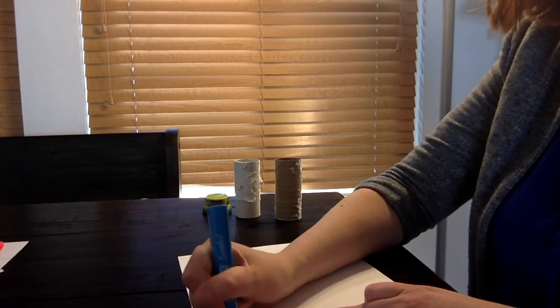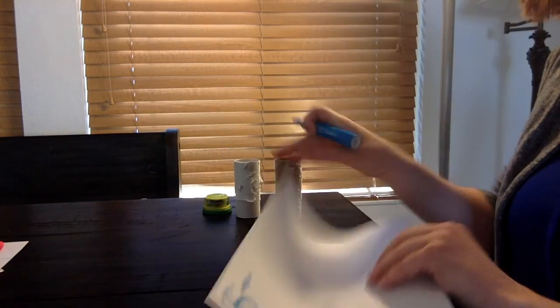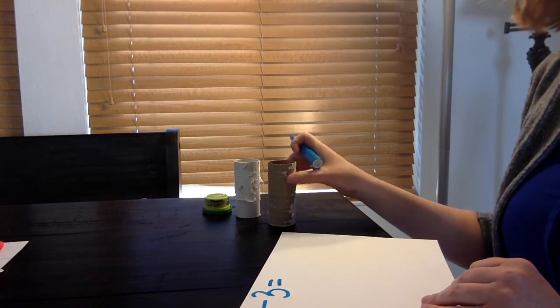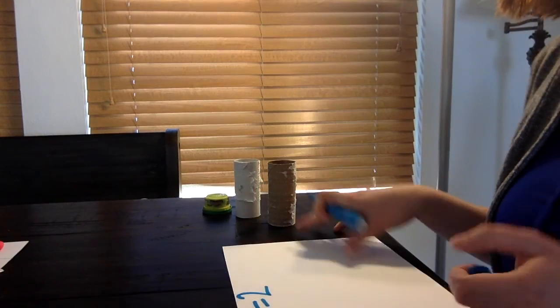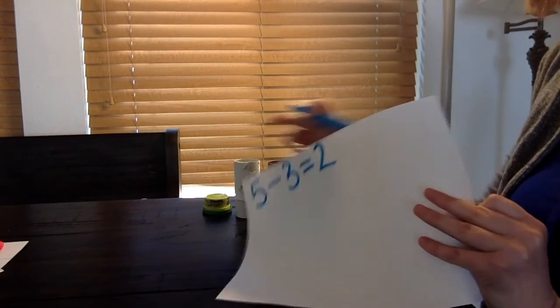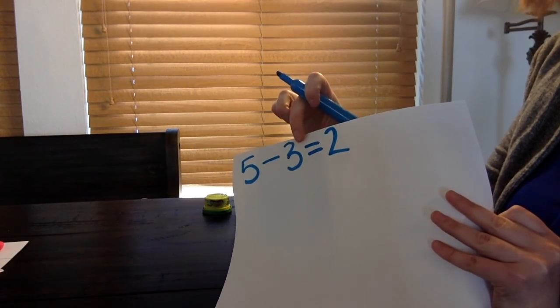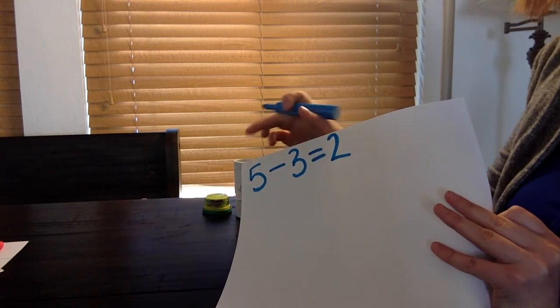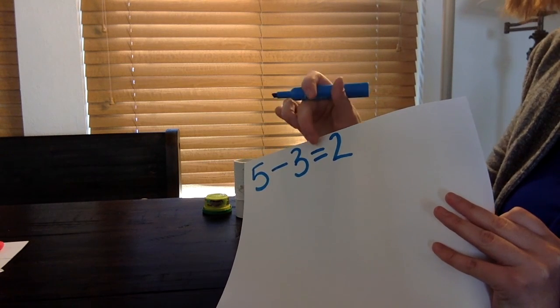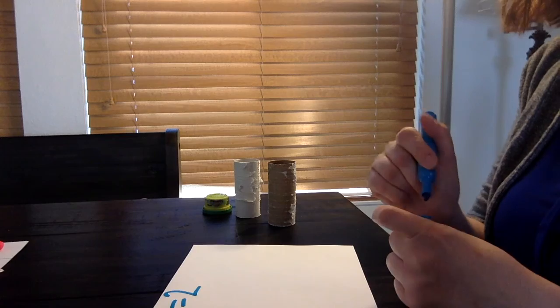So I'm going to write five, take away, my takeaway sign, five take away three. And I want to see how many I have left. So that is equal to one, two, because I have two toilet paper rolls still standing. So that tells me five take away three equals two or five minus three equals two. So I'm practicing subtraction.